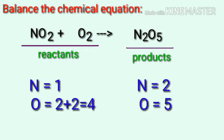If we look at this equation, we can see that the equation is not balanced. In the reactant side there are one nitrogen atom and four oxygen atoms. In the product side there are two nitrogen atoms and five oxygen atoms. The number of atoms is not balanced on both sides.